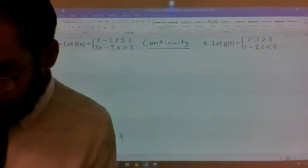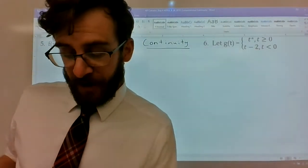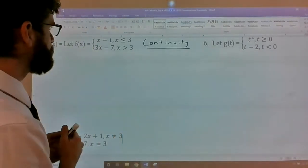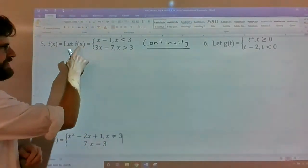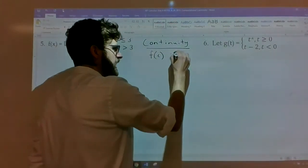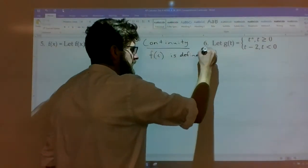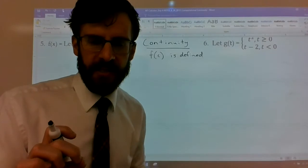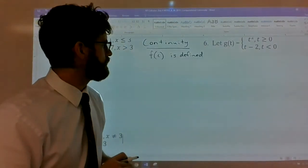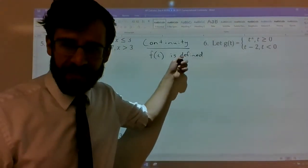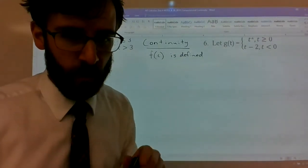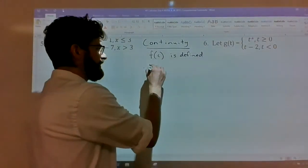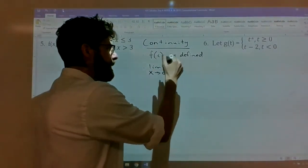Page 78 states: a function f is continuous at a number c if the following three conditions are satisfied. First, f(c) must be defined. It would be undefined if there's a hole in the graph with no corresponding point, or if it's an asymptote with nothing connecting things. Second, the limit as x approaches c must exist.